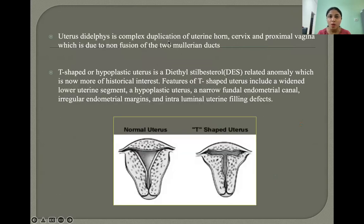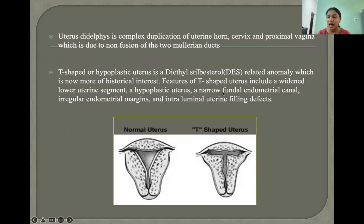Uterus didelphys involves complete duplication of the uterine horn, cervix, and proximal vagina due to non-fusion of the two Mullerian ducts. The T-shaped or hypoplastic uterus is a diethylstilbestrol-related anomaly, now more of historical interest. Features include a wide lower uterine segment, a narrow fundal endometrial canal, irregular endometrial margins, and intraluminal uterine filling defects.